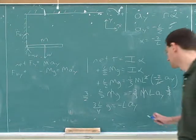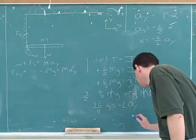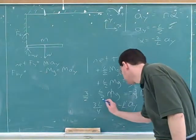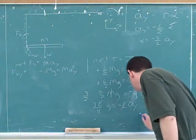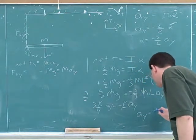So a of y is equal to negative three-fourths g, canceling out the L's from both sides.